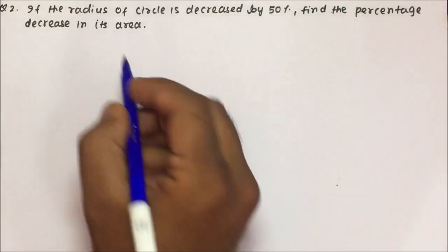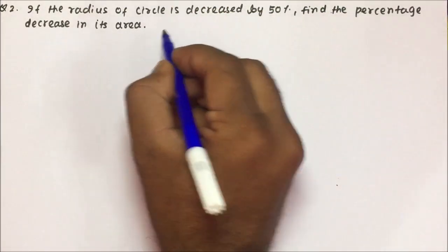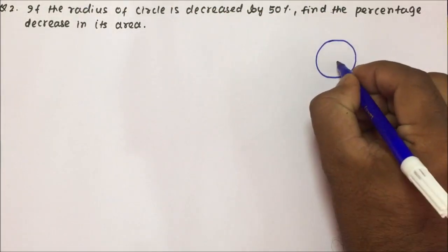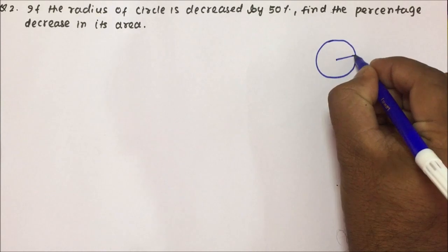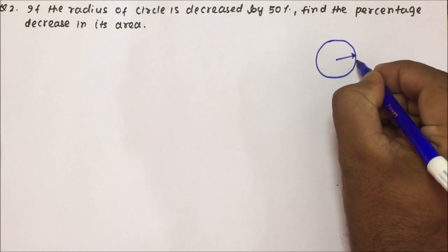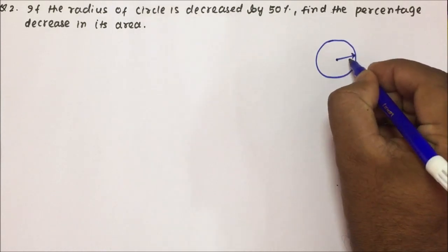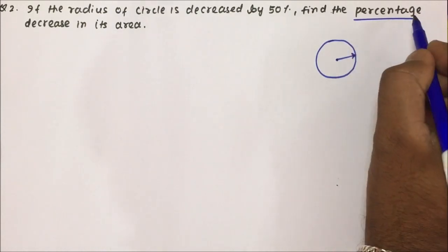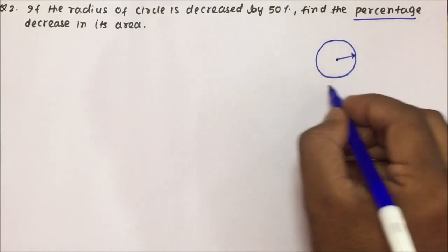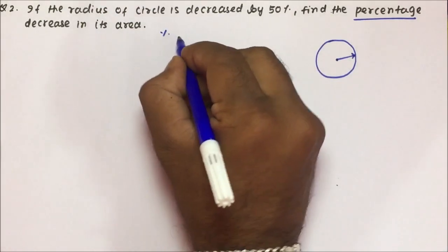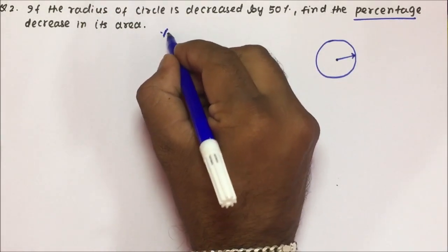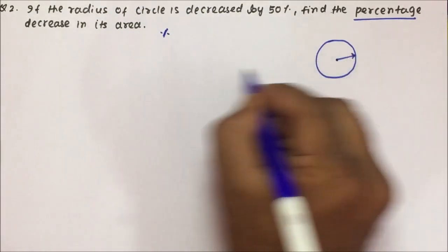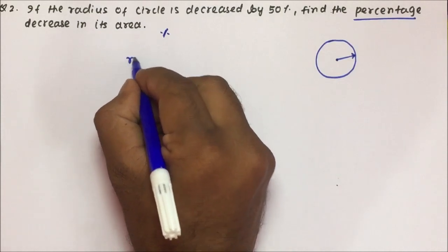Question number two: if the radius of a circle is decreased by 50 percent, find the percentage decrease in its area. When a percentage change is asked, you can assume any value and solve.